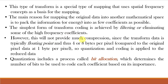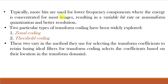The simplest form of transform coding is achieved by filtering or eliminating some of the high-frequency coefficients. However, this alone will not provide much compression, so quantization and coding are applied to the reduced data. Quantization includes a process called bit allocation, which determines the number of bits used to code each coefficient based on its importance. Typically, more bits are used for lower frequency components where energy is concentrated for most images, resulting in variable bit rate or non-uniform quantization and better resolution.